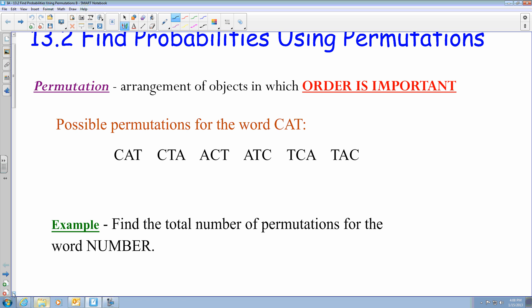And I'll show you first initially with the CAT word. We have three objects for our first example. So we can take the number three and we then multiply it by two and multiply it by one, which that equals six. That's where we get the six ways that we can make a permutation for the word CAT.